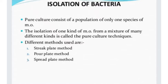Now we look at isolation of bacteria. A pure culture consists of a population of only one species of microorganism. Isolation of one kind of microorganism from a mixture of many different species is called the pure culture technique. There are three methods: streak plate method, pour plate method, and spread plate method.